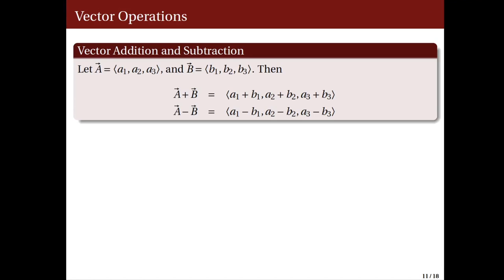Now we move on to vector addition and subtraction. Suppose we are given two vectors: a with components a1, a2, a3, and b with components b1, b2, b3. Then the sum a + b is another vector whose components are a1+b1, a2+b2, a3+b3 — that is, the sum of the corresponding components. Similarly, the difference a − b is a vector whose components are the differences between the corresponding components of a and b.